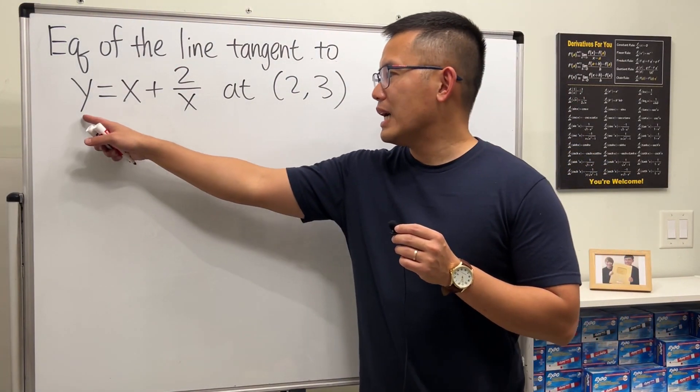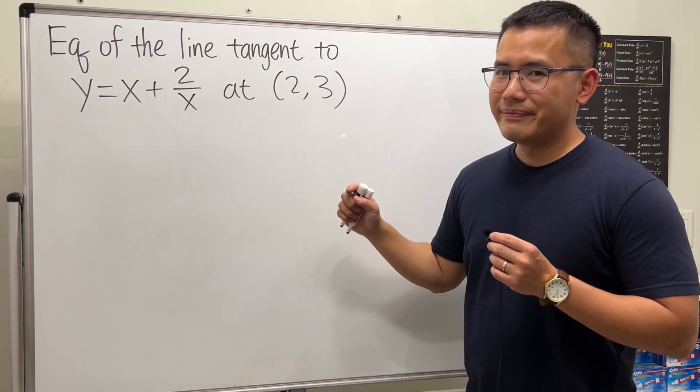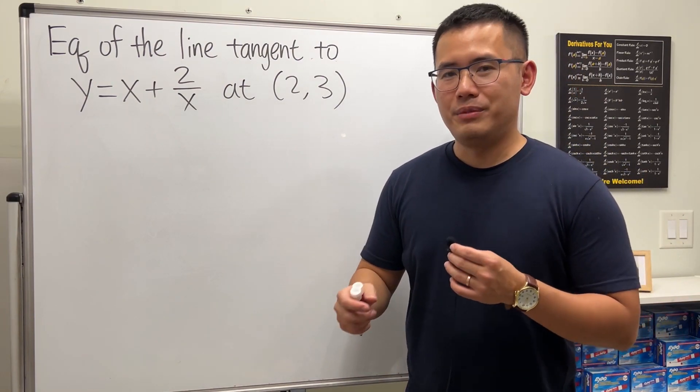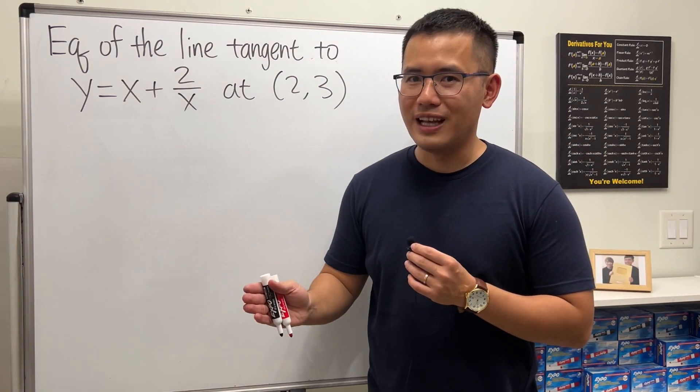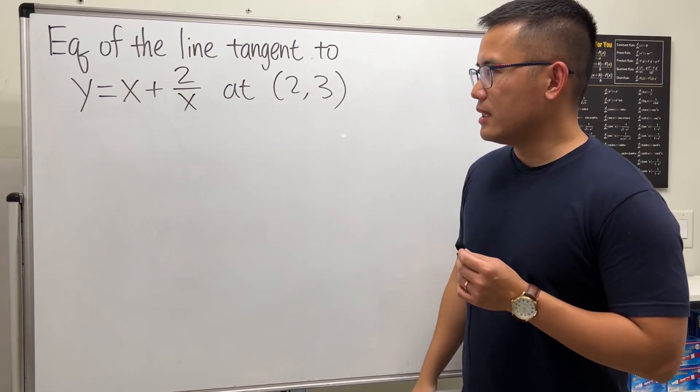Another question on finding the equation of the tangent line. This time we have this curve and we want the tangent line at (2, 3). Again, we need the slope, which is just the derivative, and we have the point right here already. Let's focus on getting the derivative first.